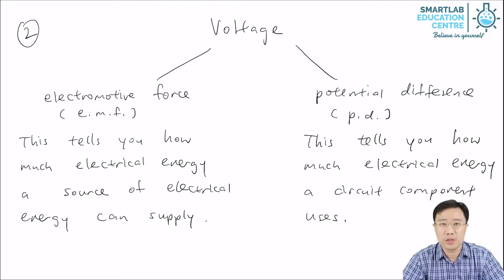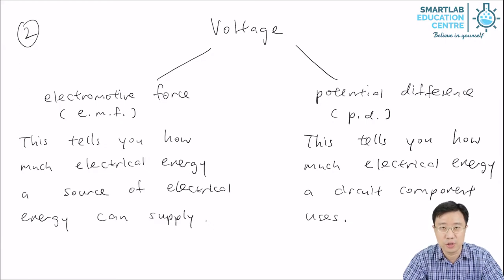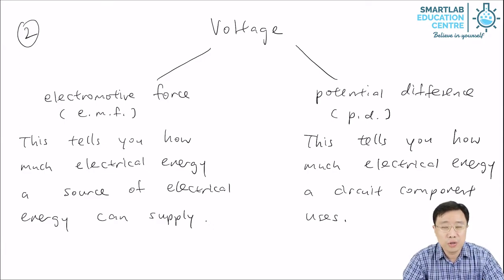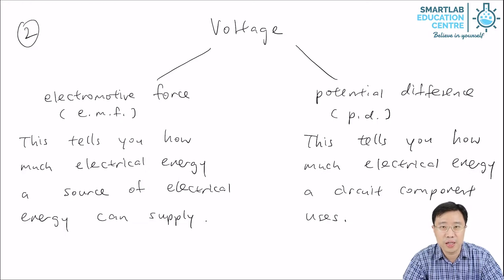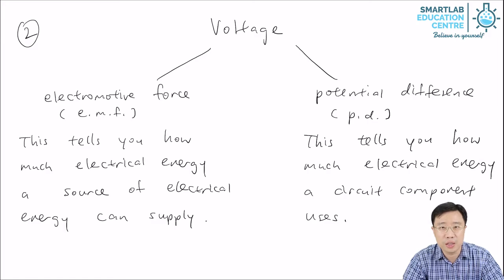The second type of voltage is called potential difference. The short form is PD. This is for a circuit component that is not a source of electrical energy — for example, a light bulb. It tells you how much electrical energy that circuit component uses. So both EMF and PD are voltages, but the difference is that EMF is for a source of electrical energy, while PD is for a circuit component that uses electrical energy.